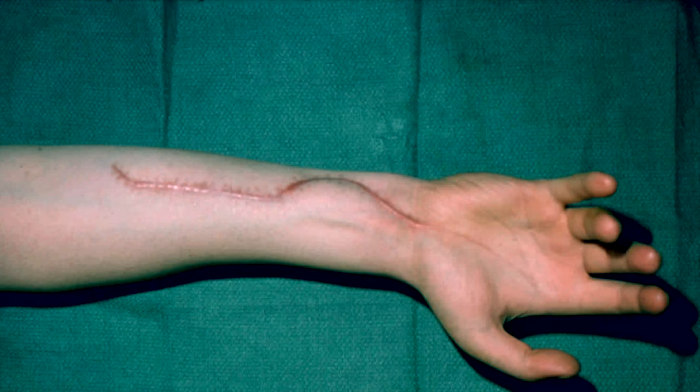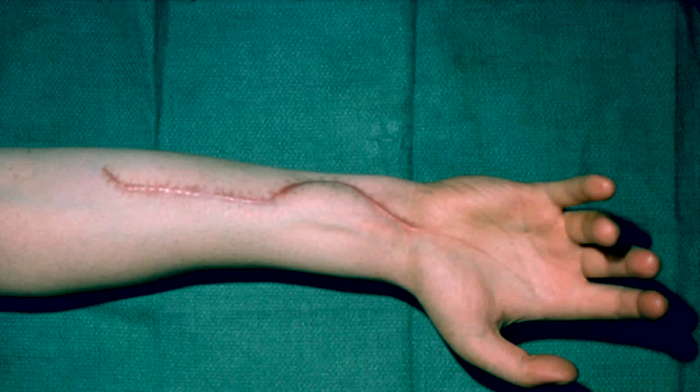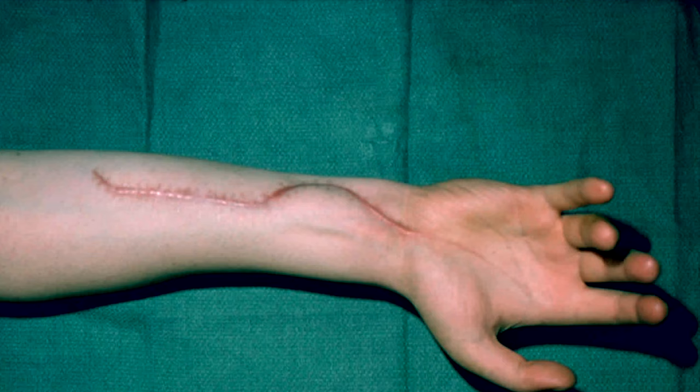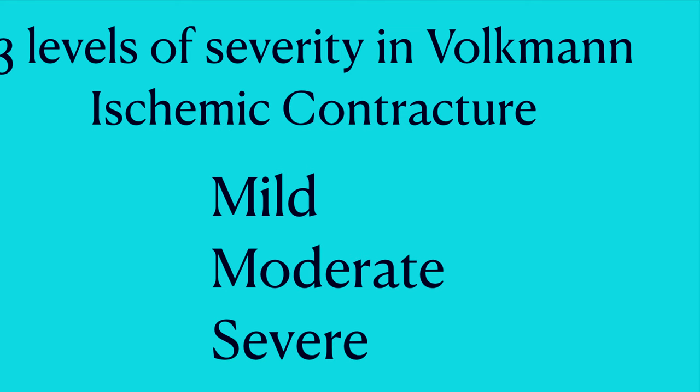A prolonged decrease in blood flow injures the nerves and muscles, causing them to become stiff and shorten. When the muscle shortens, it pulls on the joint at the end of the muscle — just as if it were normally contracted — but because it is stiff, if the joints remain bent and stuck, this leads to a contracture. In Volkmann's contracture, the muscles of the forearm are severely injured, leading to contracture deformities of the hands and wrist.